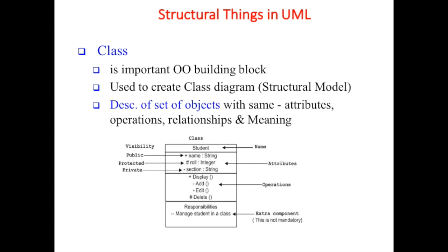Private members are used within that class only - they can only be operated or seen within the class. An example is the Student class, which has at the top the class name 'Student', then attributes like name (string), roll number (integer), section (string), and operations like display and delete. The further responsibility could be 'manage student' if they are a captain or class leader.